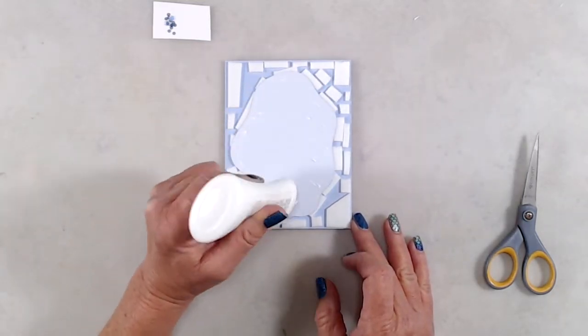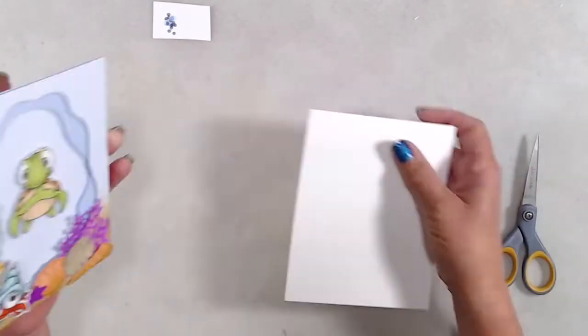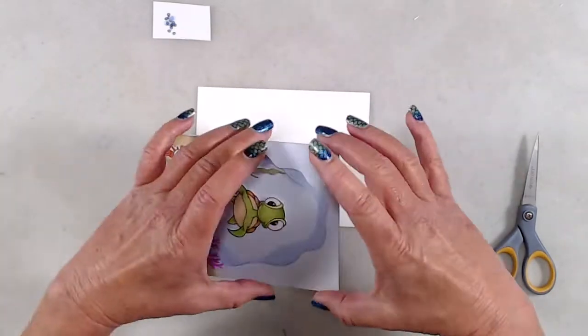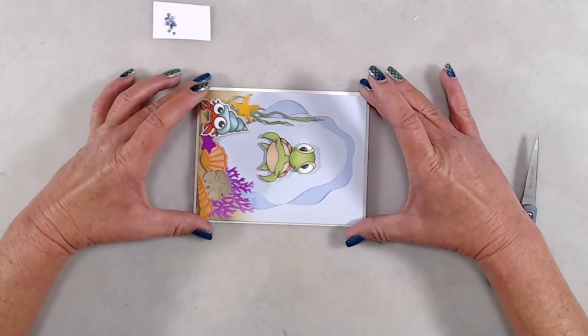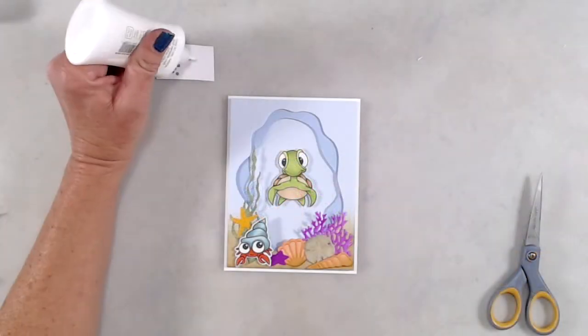Once I had everything adhered to the card front, I removed all of the release paper from the foam tape, added a little bit of liquid glue to the back light blue panel, and adhered that to the front of a top folding A2 sized note card that I had created from white cardstock.